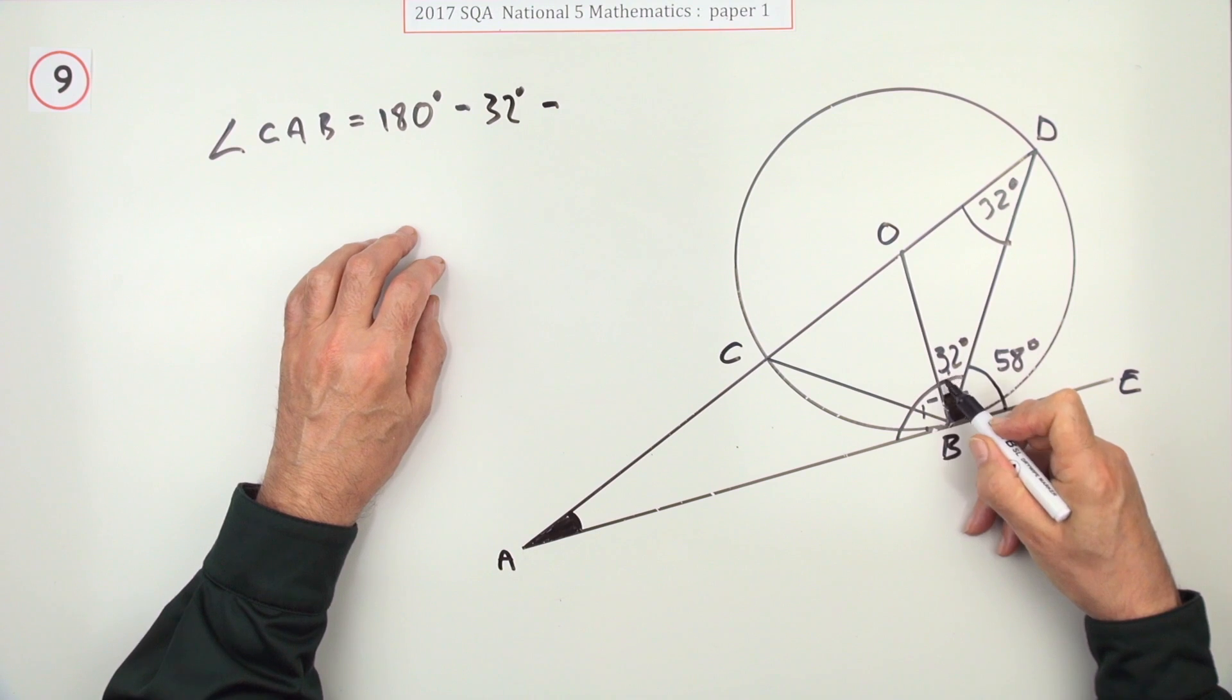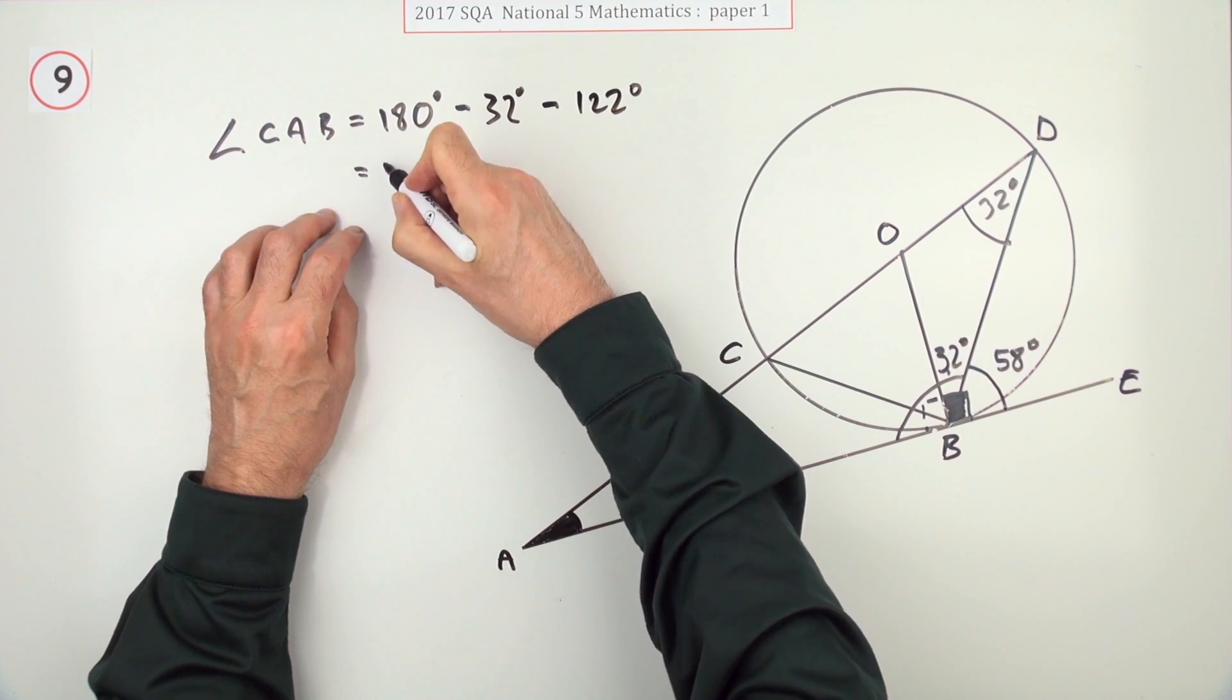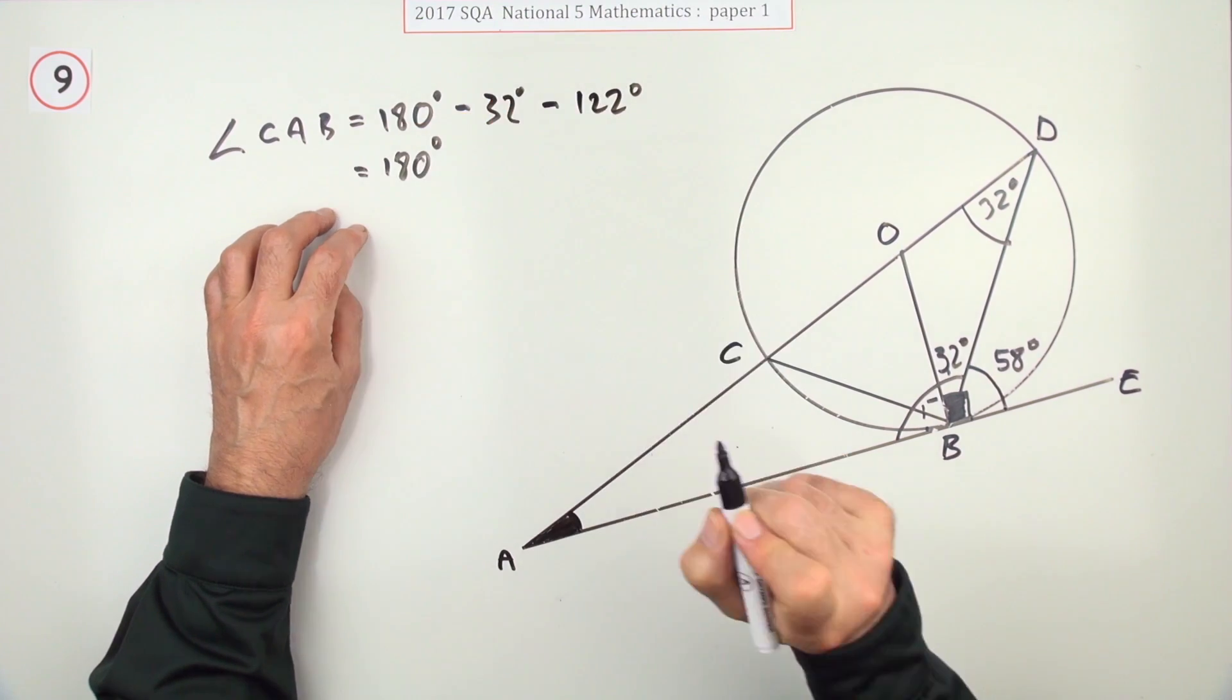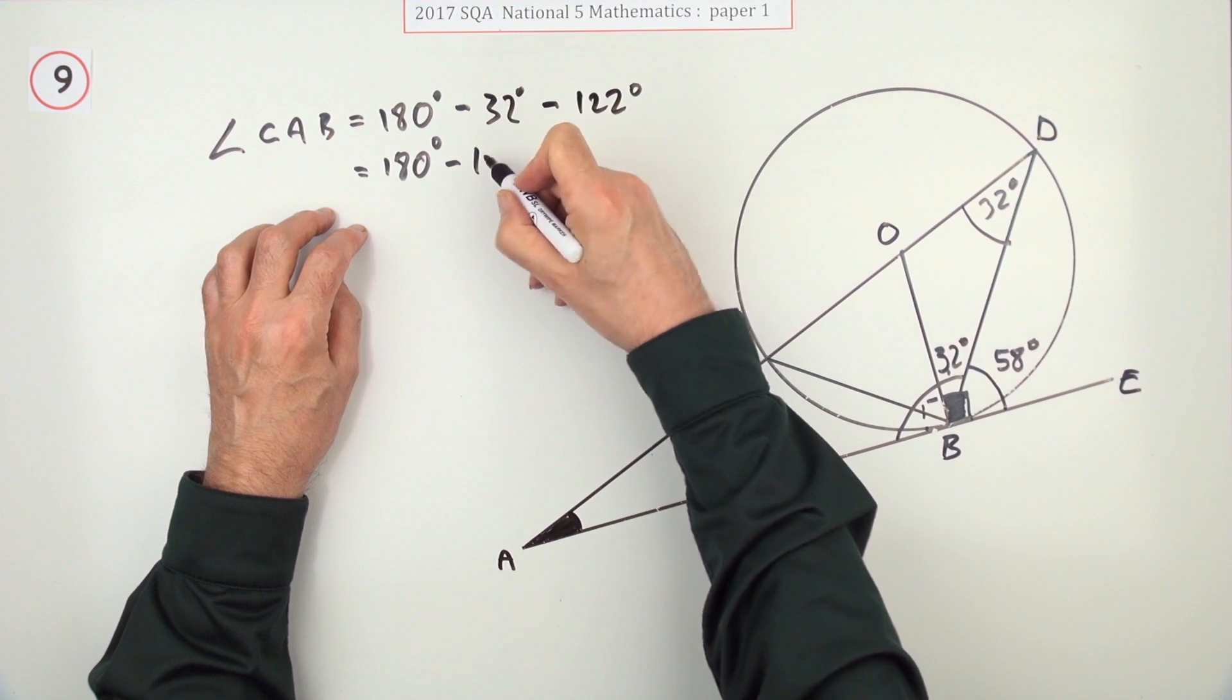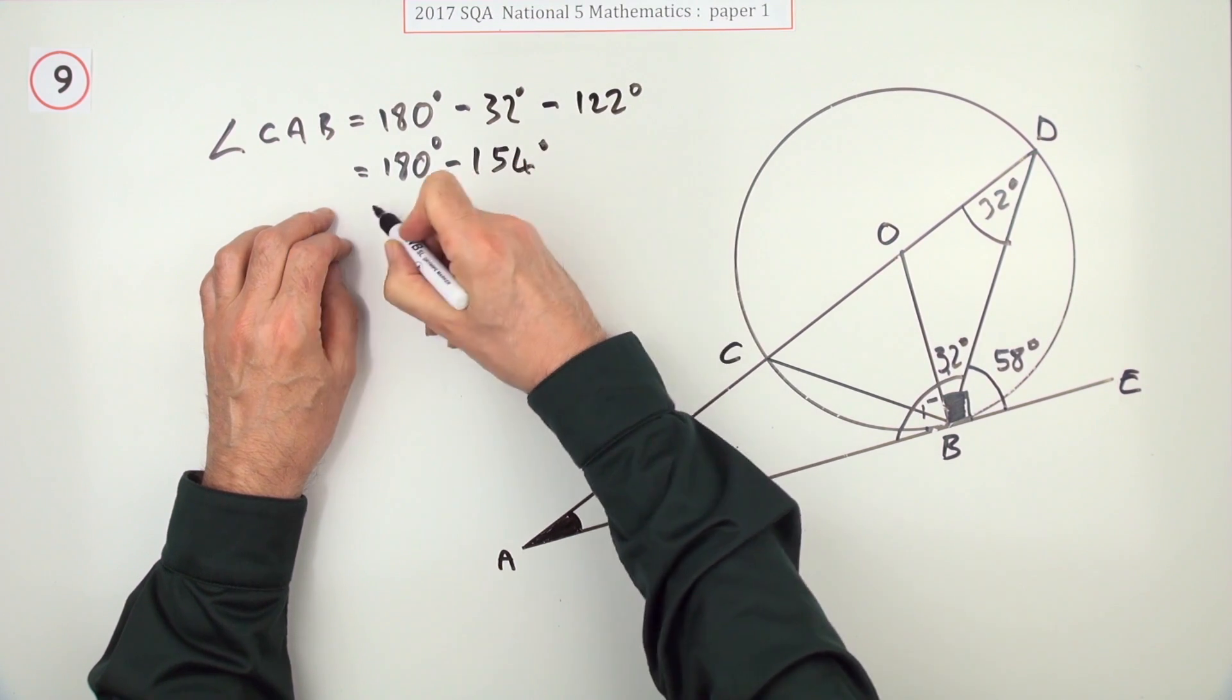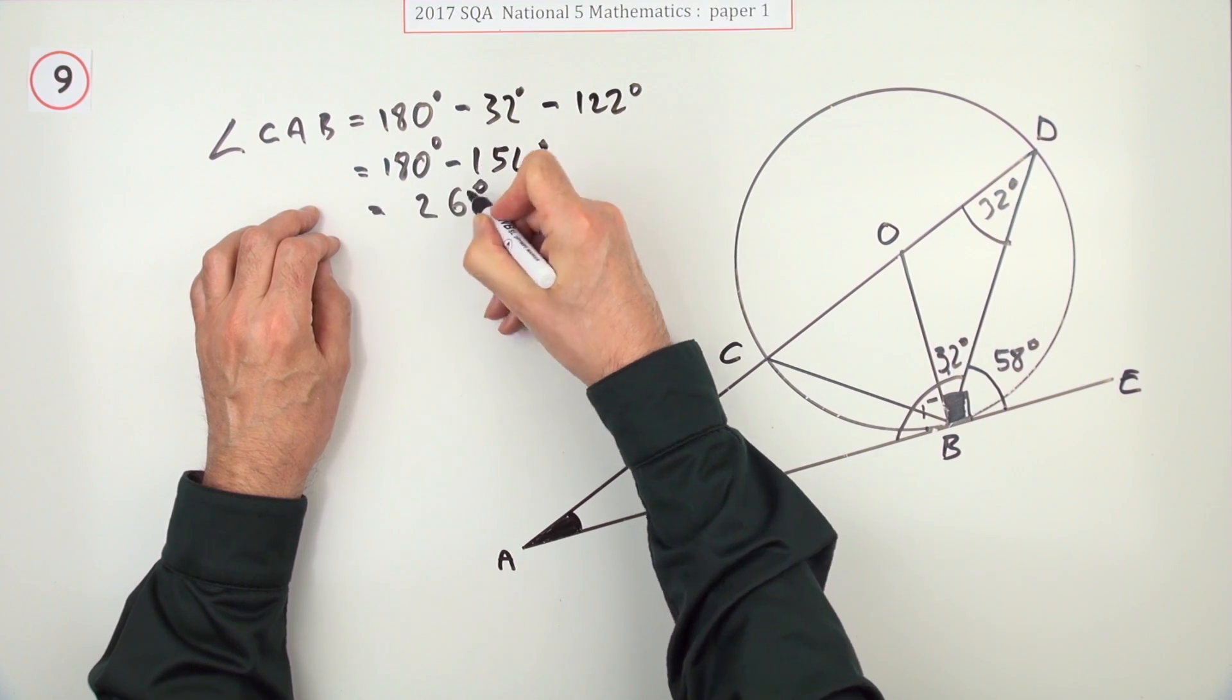Now there are other ways. Or 90 plus that, which is 122. So you've got 180. And you're going to take away altogether, 154 degrees. And if you take away 154, that'll leave you 26.